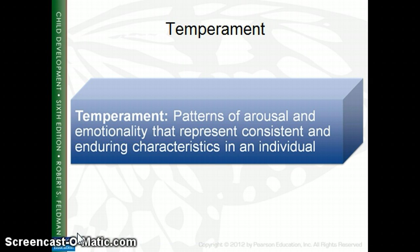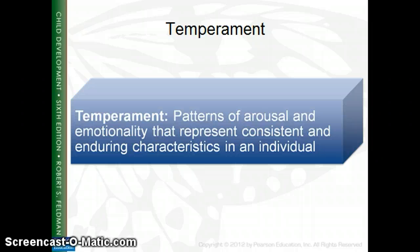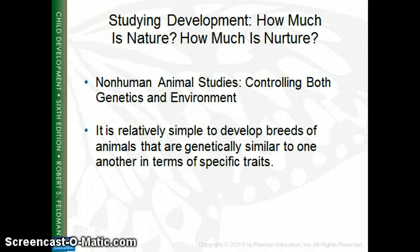Temperament is defined as patterns of arousal and emotionality that represent consistent and enduring characteristics in an individual — essentially what makes your personality different from the next person. What gets you going compared to what gets someone else going? What might upset one person and not faze another? Research now shows that our temperament is more biologically based and genetic than was once thought. Using animal studies, researchers can look at breeds with genetically similar or different traits, which tells us a lot about what is genetic in humans.